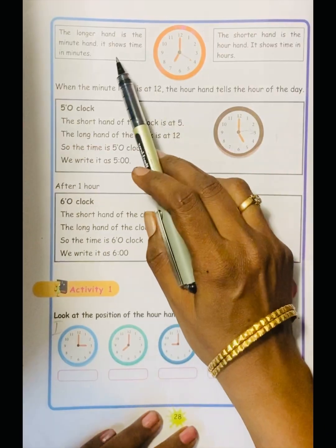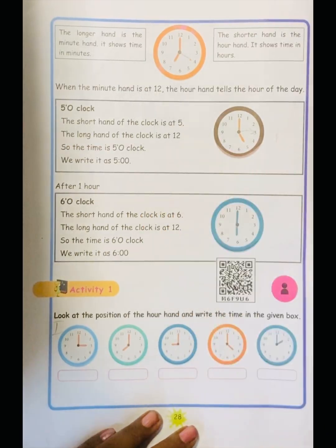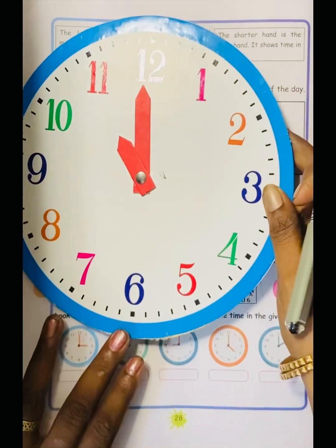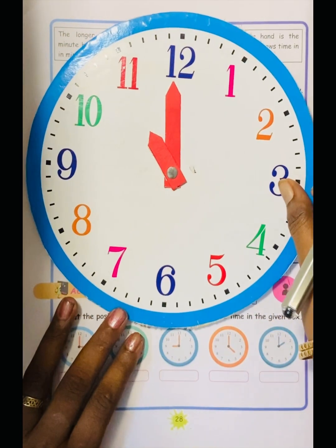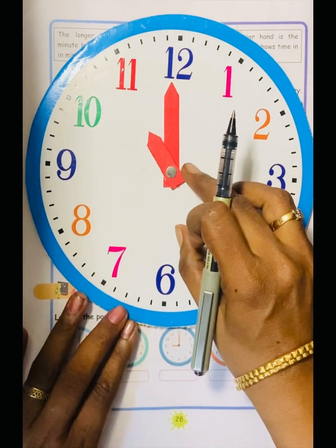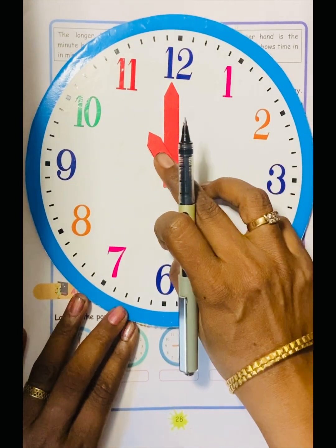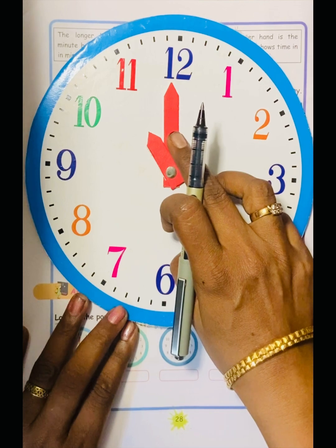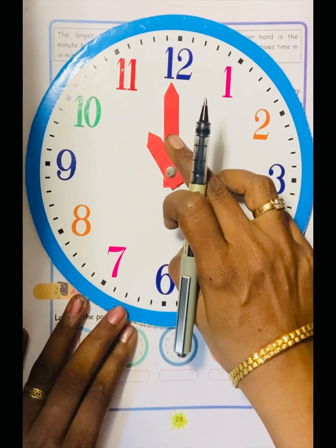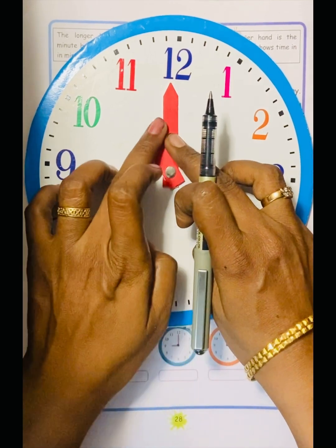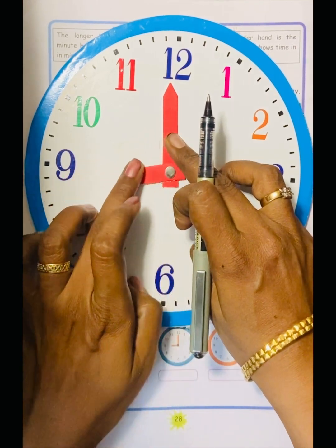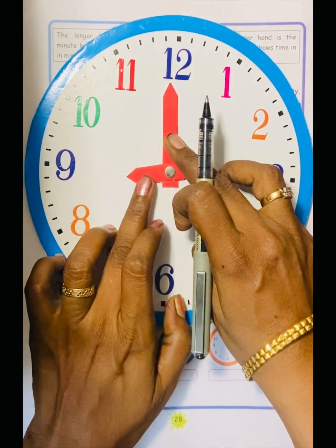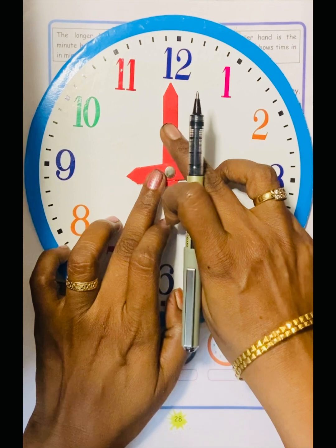In time, we have two hands. How to see the time? We have two hands: the short hand and the long hand. The short hand shows the hours. The long hand shows the minutes.